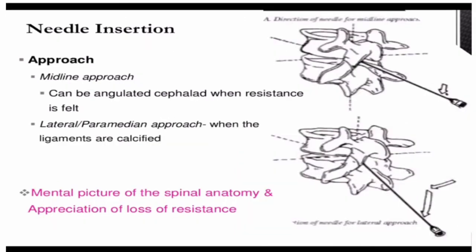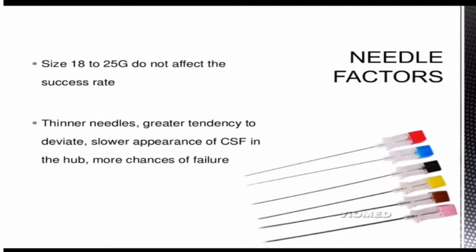If the midline approach is used for needle insertion, the needle can be angulated cephalad when resistance is felt. Alternatively, a lateral or paramedian approach can be used when the ligaments are calcified. These are important considerations regarding needle insertion technique in cases of potential failure.